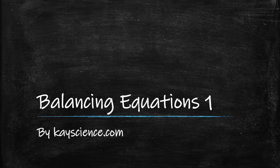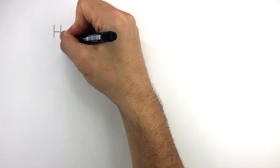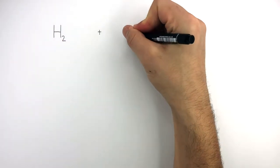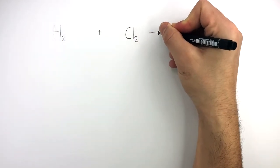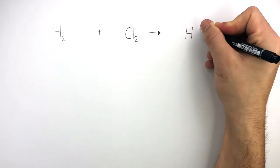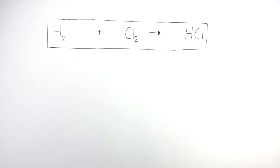Balancing Equations 1 by kscience.com. H₂ plus Cl₂ reacting to form HCl is the equation we're going to balance.